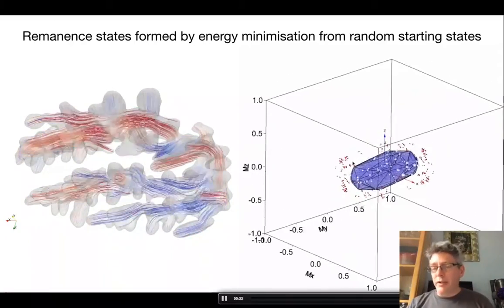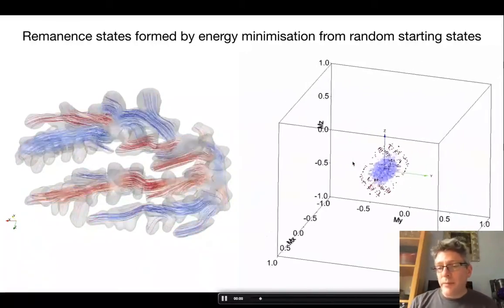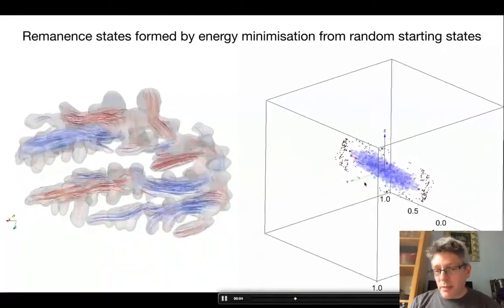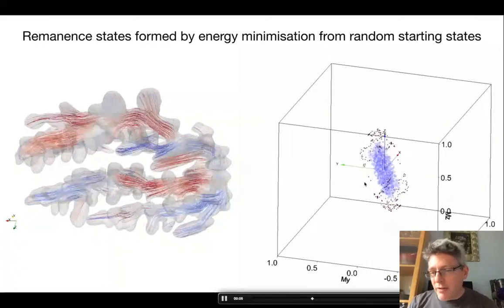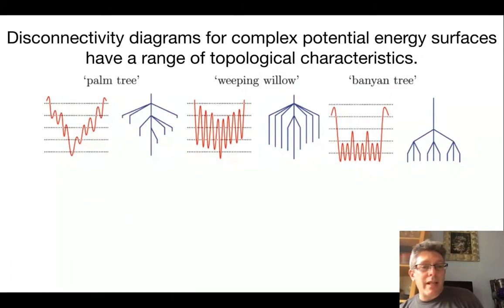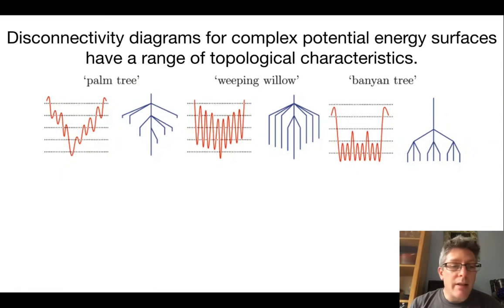The red points here are saturation isothermal remanent magnetizations. You can see the range of magnetization states that can be adopted, but which ones are thermodynamically most favorable, and how do you explore this energy landscape, hopping from state to state over the energy barriers that exist there?